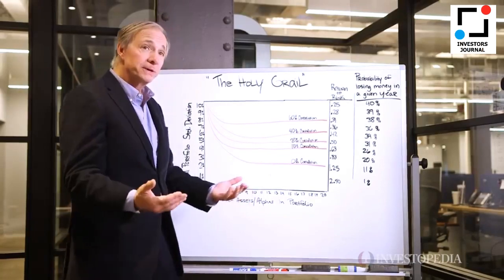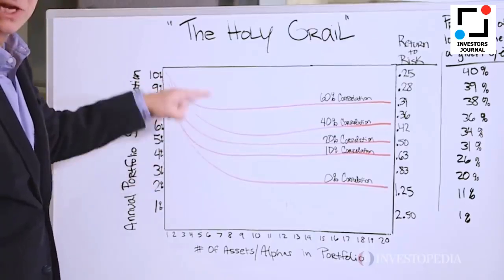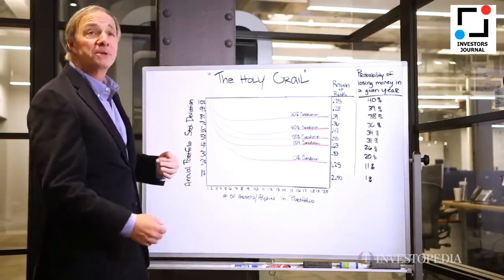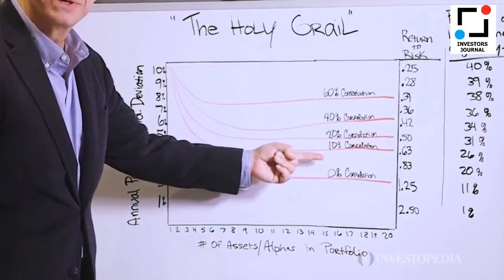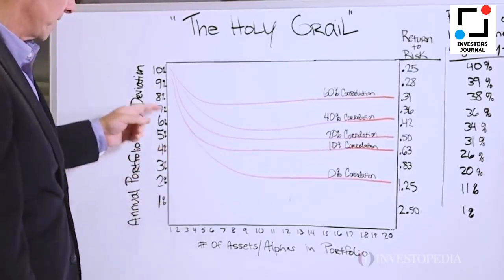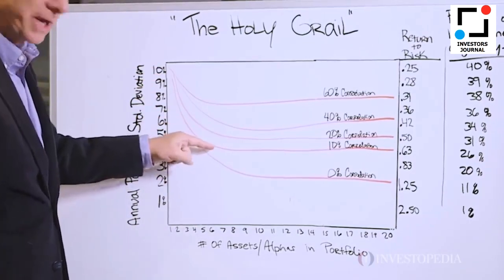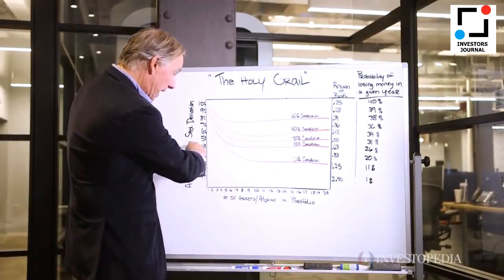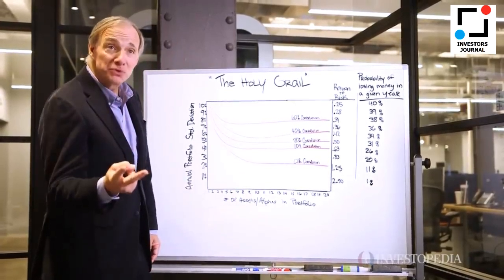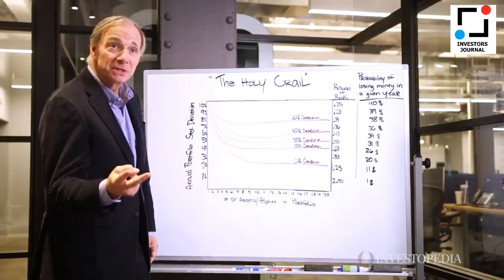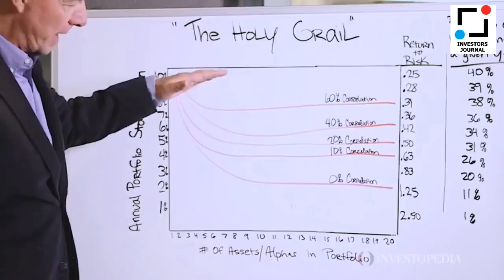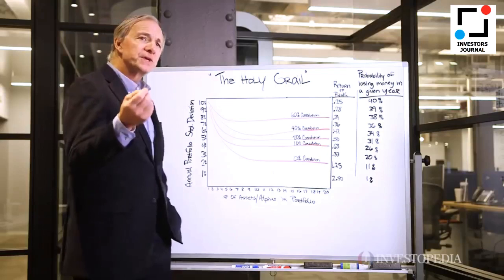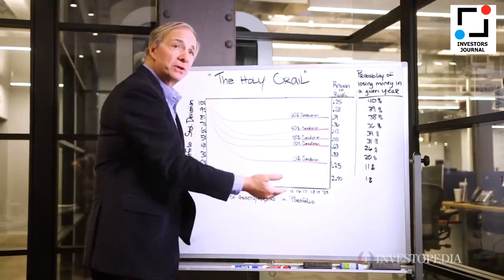That's important. Now, if I look at how that changes according to the levels of correlation, what would happen if I added in something that had a 10% correlation? That's what that line shows — at about 7 or 8 assets, I cut my risk in half. That means I've doubled my return relative to my risk. So as I go down this, I start to understand what the power of diversification is in terms of the things that I'm going to look for.